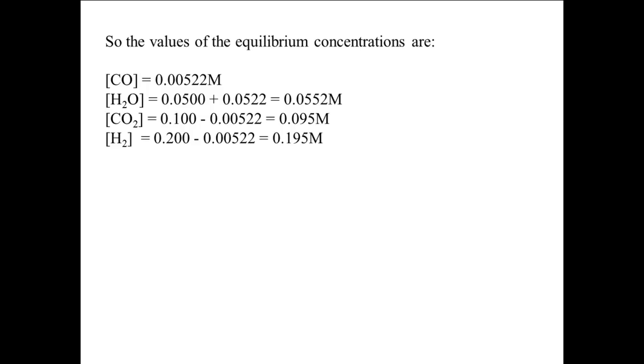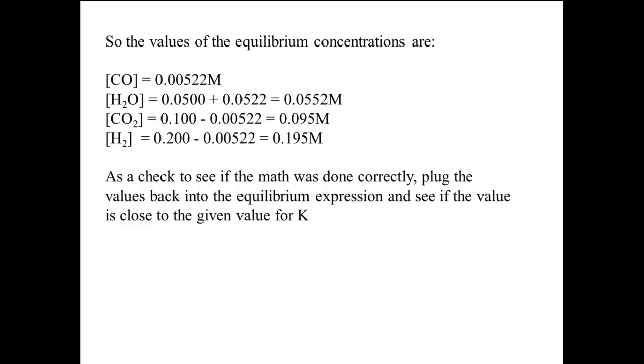As a check to see whether we've done the calculation correctly, plug the values back into the equilibrium expression and see if the value is close to the given value for K. When we do this, we get 64 equals 0.095 times 0.195 divided by 0.00522 times 0.0552. This is equal to 64.3. This is close enough because the value of K is only good to two sig figs, since the concentration of CO2 is only good to two sig figs.